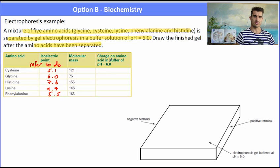Now if we've got a buffer solution of 6, some of these things will feel like they're in an acidic solution, some of them will feel like they're in a basic solution. Remember if something feels like it's in an acidic solution it's going to have a positive charge. If it feels like it's in a basic solution it's going to have a negative charge. So a pH of 6, if we have an isoelectric point of 5.1, that is going to feel like it is in a basic solution. Its isoelectric point is lower at 5.1. The pH is 6 so that means it's going to feel negatively charged.